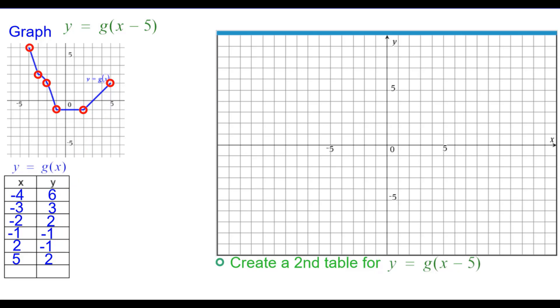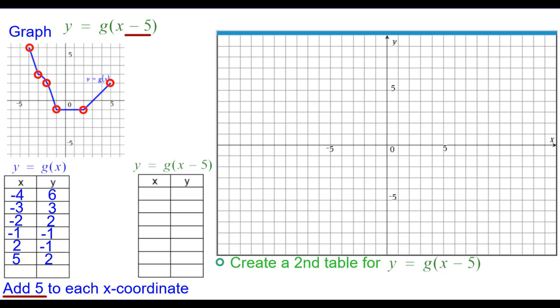We need to create a second table for the graph we want. And we need to add 5 to each x coordinate because of the minus 5 inside the function.